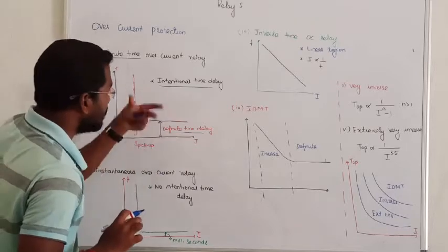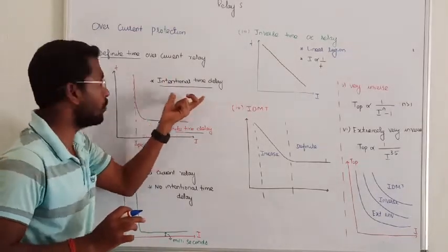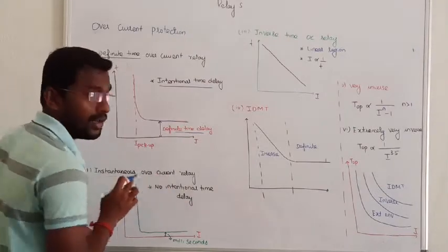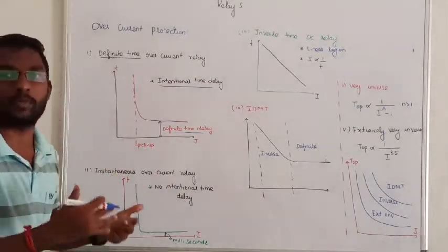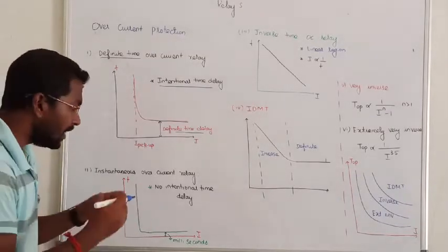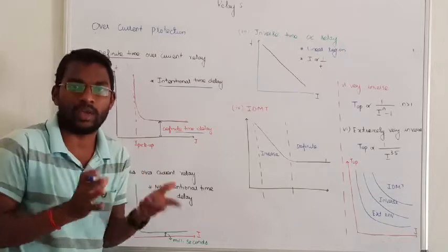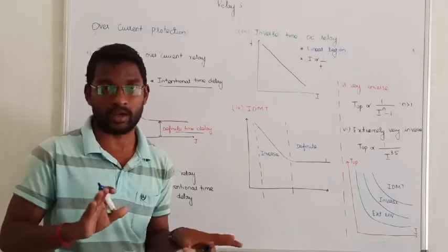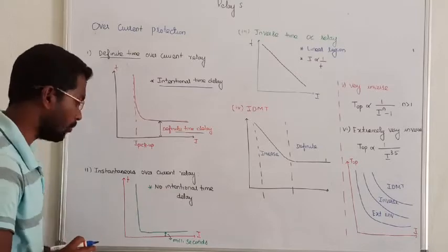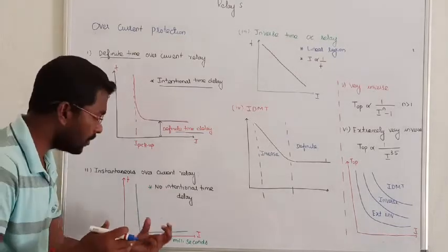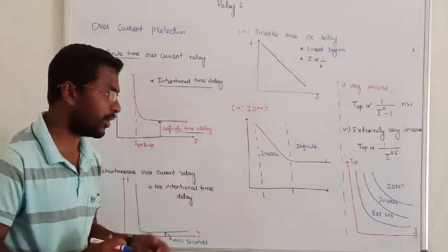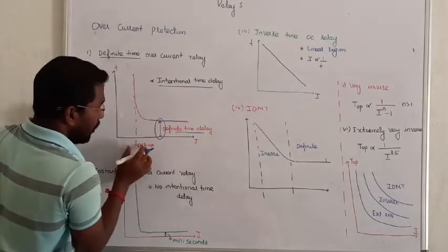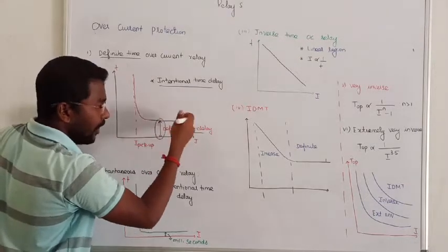If the system has a time delay, and if there is no time delay — for the definite time overcurrent relay — the current time delay is different. If there is no phase shift or lagging or anything else, at any moment there is a fault, there is a phase shifting. There is no intentional time delay — it will be zero time delay.